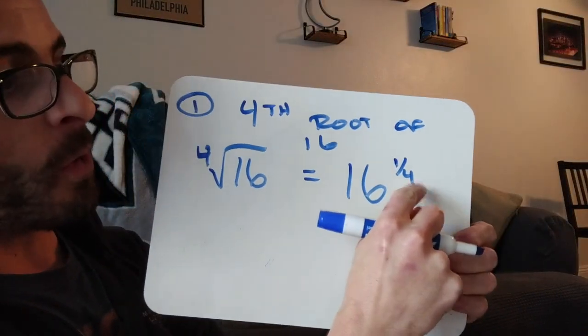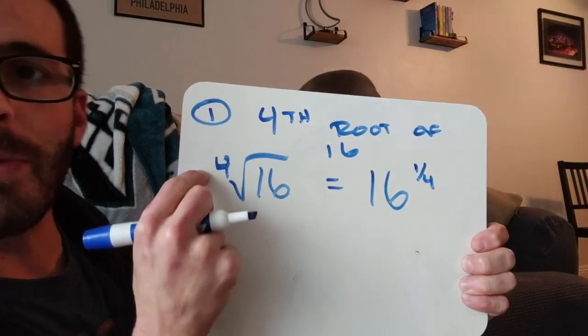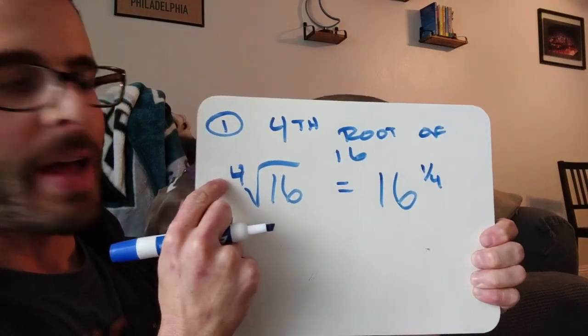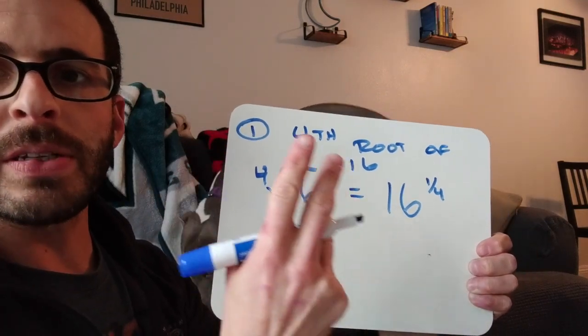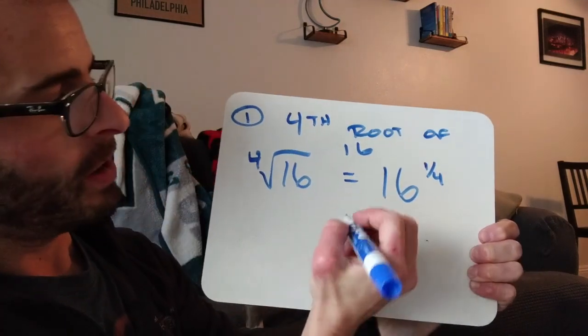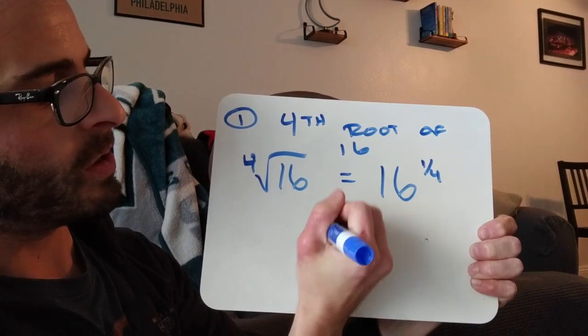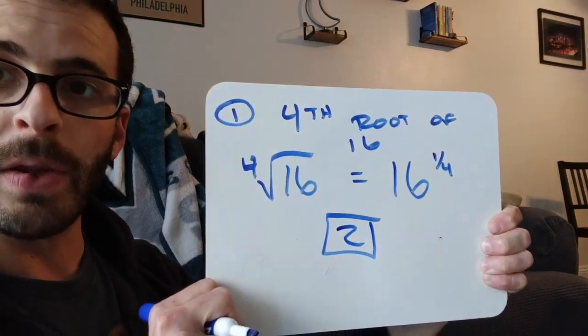16 to the 1/4 power with the 4 in the denominator, that means the 4 came from the little root symbol right here, and it's the same thing. But really what you're asking yourself is what number times itself, times itself, times itself, gets you 16, and the answer is 2.